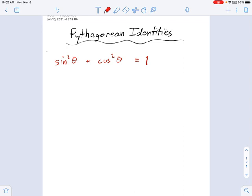And here's the first example of this. When you have an angle theta, and you're doing sine squared of theta plus cosine squared of theta, the result of it is always, always one.